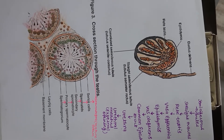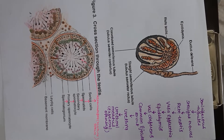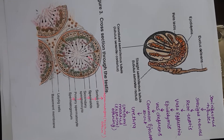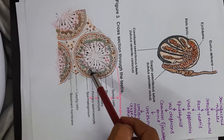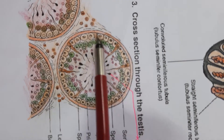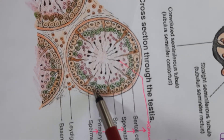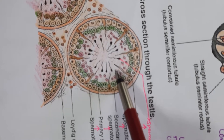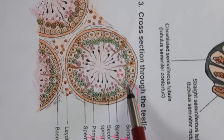Good morning students. We have already discussed the chapter on human reproduction — each aspect of the male and female reproductive systems. We also discussed the section of the testes through seminiferous tubules, covering the various stages of developing gametes such as spermatogonia, primary spermatocytes, spermatids, and sperms. For the development of sperms, there are also Sertoli cells.